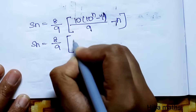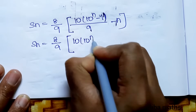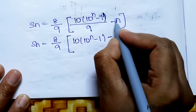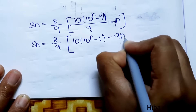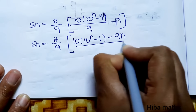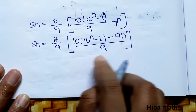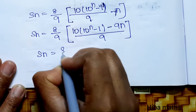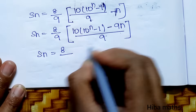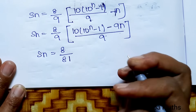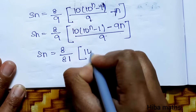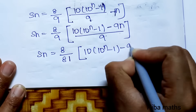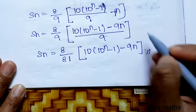Simplifying: (8/9) × [(10·(10ⁿ − 1))/9 − n]. Multiplying through, S(n) = (8/81)·[10·(10ⁿ − 1) − 9n], which is the sum for the first series.